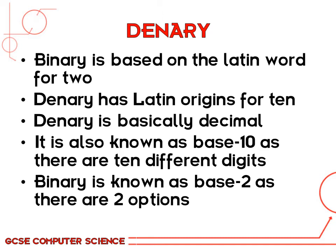Binary is known as base 2, so you can see where we're going with this one. Binary has two options: 1 or 0, so base 2. Denary has 10 options, so base 10.